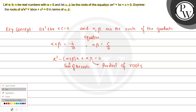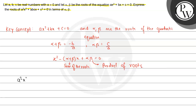Then the solution is: for the equation a³x² + abcx + c³ = 0, let x₁ and x₂ be the roots of this equation.